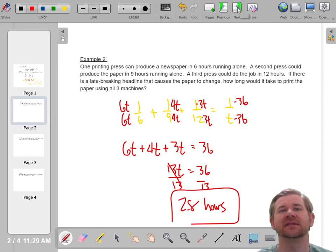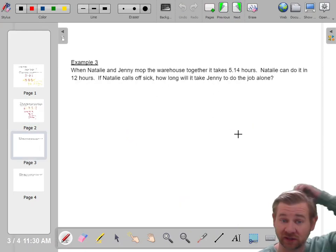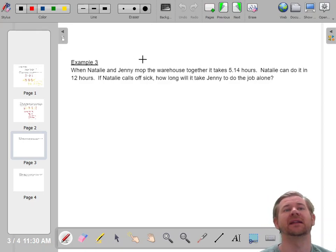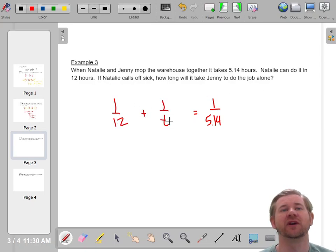In this one, they're going to give us not, we're not going to find the total time, we're going to find the time it takes one person to do it alone. So it says Natalie and Jenny, it takes them together 5.14, so one over 5.14. Natalie can do it in twelve hours, one over twelve, but if Jenny does it by herself, we don't know, that's one over t.